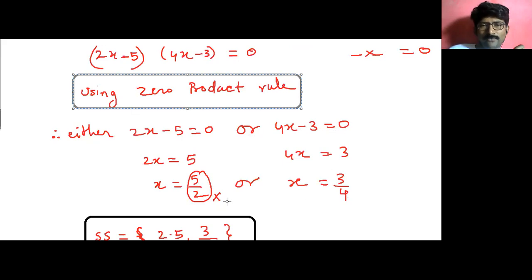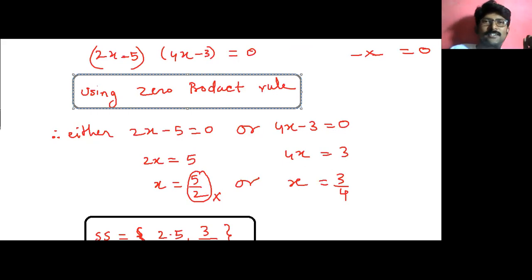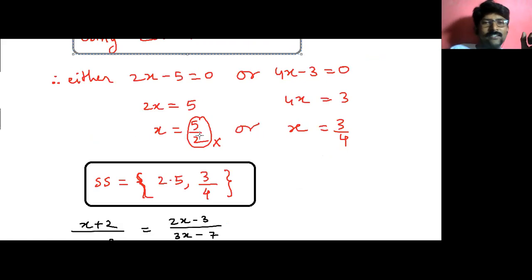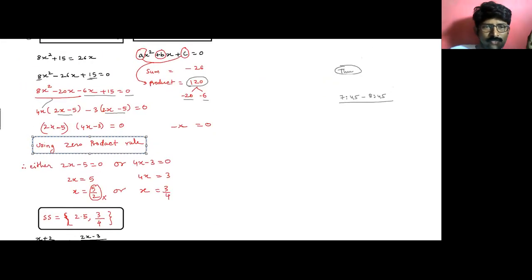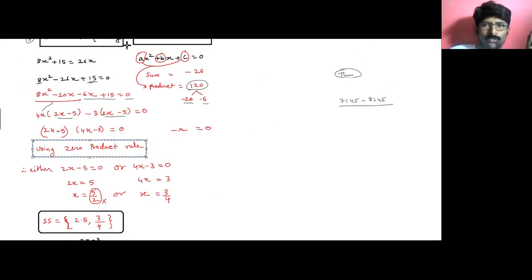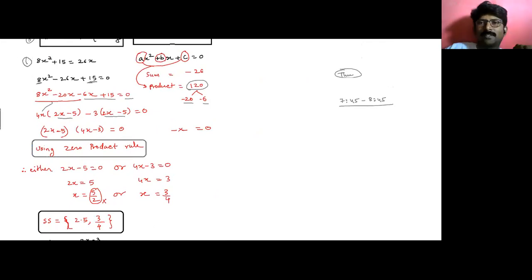Or 4x minus 3 equals 0, meaning 4x equals 3, so x equals 3 over 4. Now some people write the answer as 5/2 comma 3/4 — that answer is considered wrong. Not wrong mathematically, but improper fractions are not valid in your final answer. You must convert them to either decimals or mixed fractions: so 5/2 becomes two and a half or 2.5, and 3/4 stays as 3/4. This was sum number one — if you have any doubts, please ask me immediately.